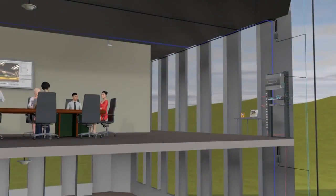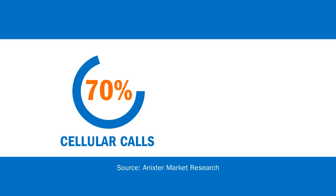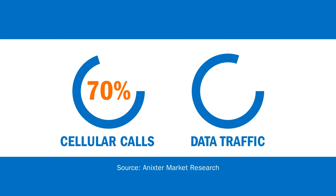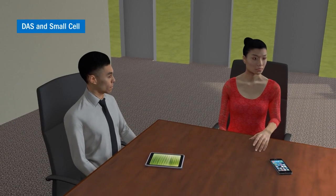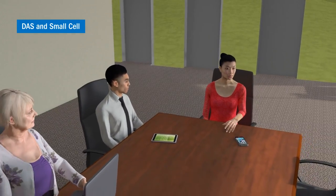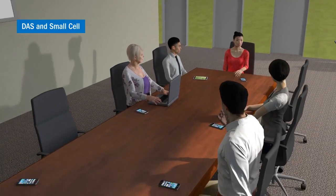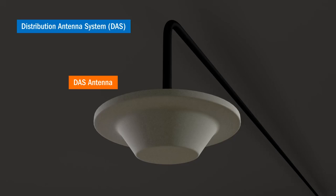Why do you need additional cellular coverage within a building? 70% of cellular calls and 80% of data traffic originate from within buildings, so providing adequate coverage is a necessity. DAS and small cell solutions can ensure you're connected anywhere within your building to utilize all functions of your smartphone or other cellular device.